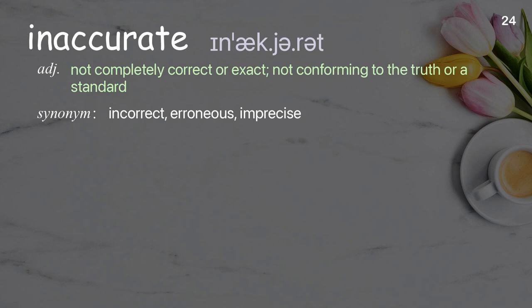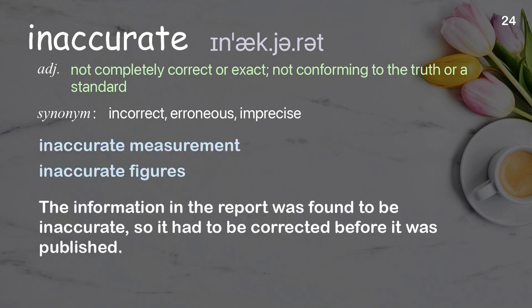Inaccurate: not completely correct or exact; not conforming to the truth or a standard. Examples: inaccurate measurement, inaccurate figures. The information in the report was found to be inaccurate, so it had to be corrected before it was published.